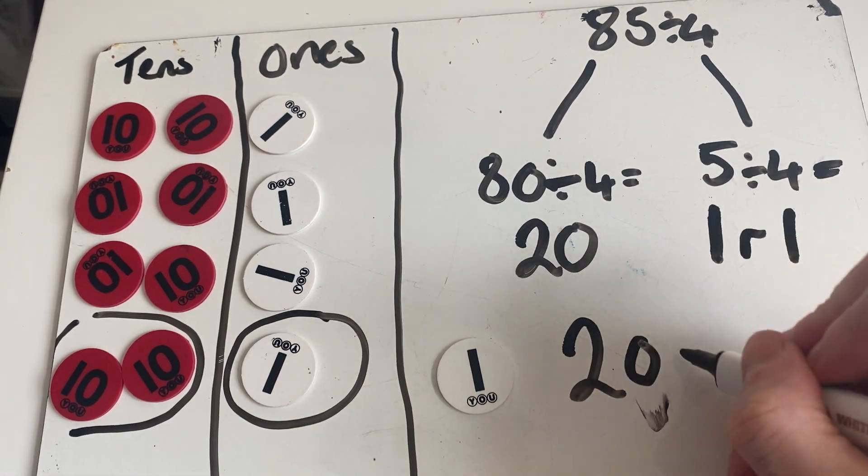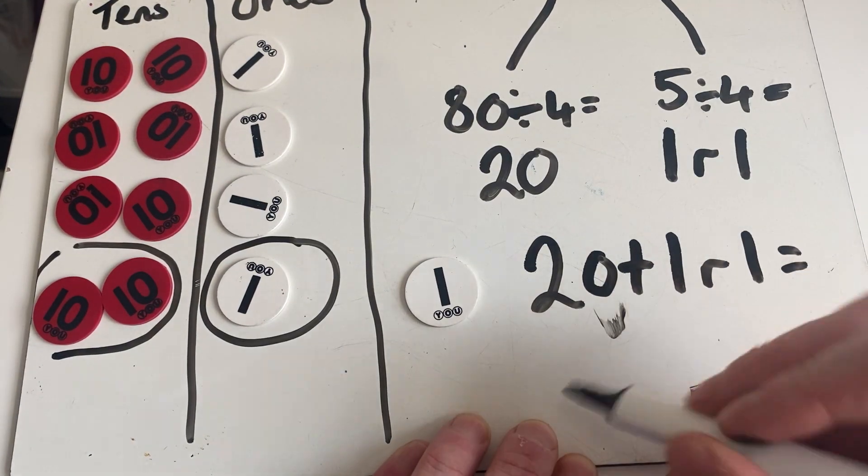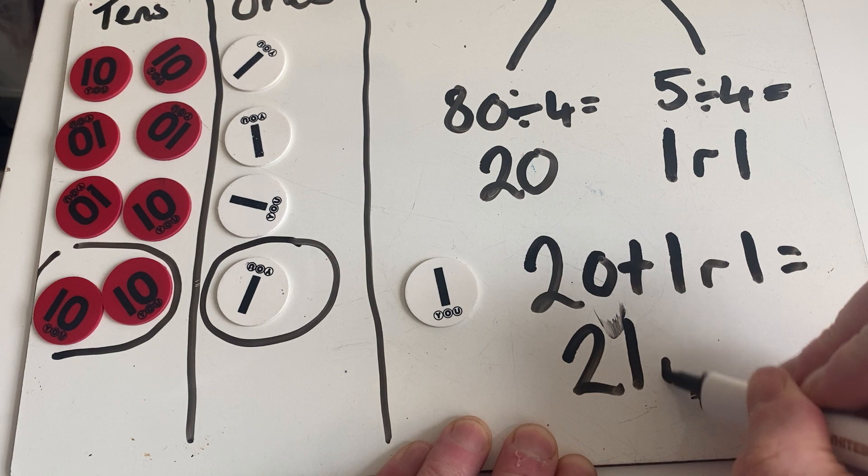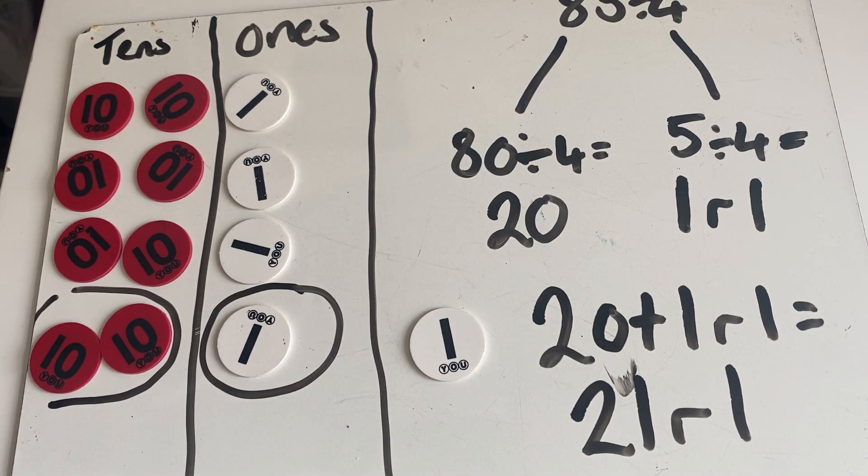So 20 plus 1 remainder 1 is equal to 21 remainder 1. That's using that visual representation. I'm now going to show you another example of how that can look using a bus stop method.